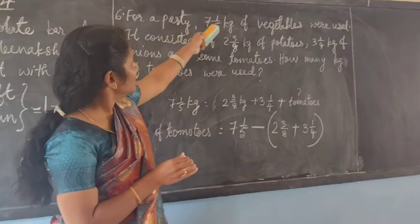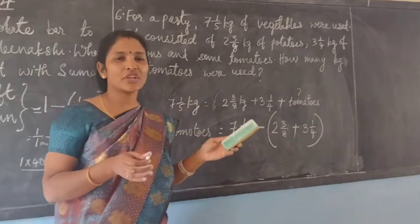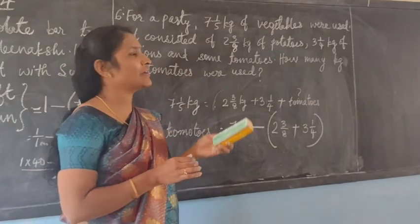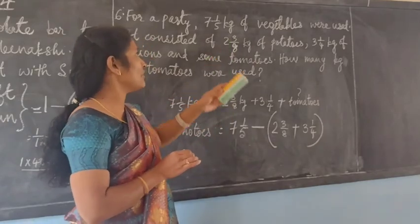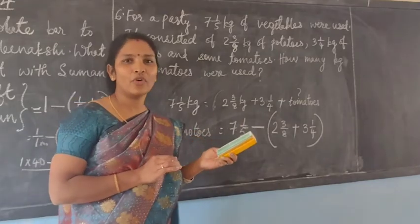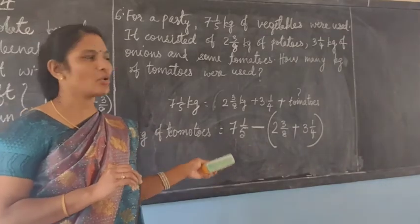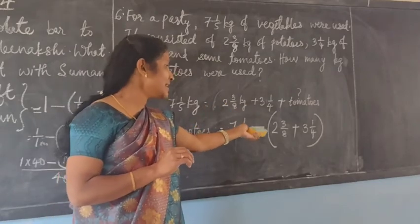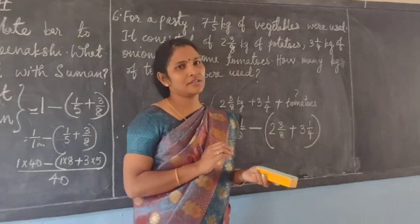You can see here: 7 and 1/5 kg of vegetables is the total weight. Write the statement — weight of vegetables equals 7 and 1/5 kg. Next statement: weight of potatoes is 2 and 3/8 kg. Next: weight of onions is 3 and 1/4 kg. Therefore, weight of tomatoes equals total weight of vegetables minus, in the bracket, weight of potatoes plus weight of onions. We have to convert all to improper fractions, then find the LCM and continue the process of addition and subtraction of fractions.